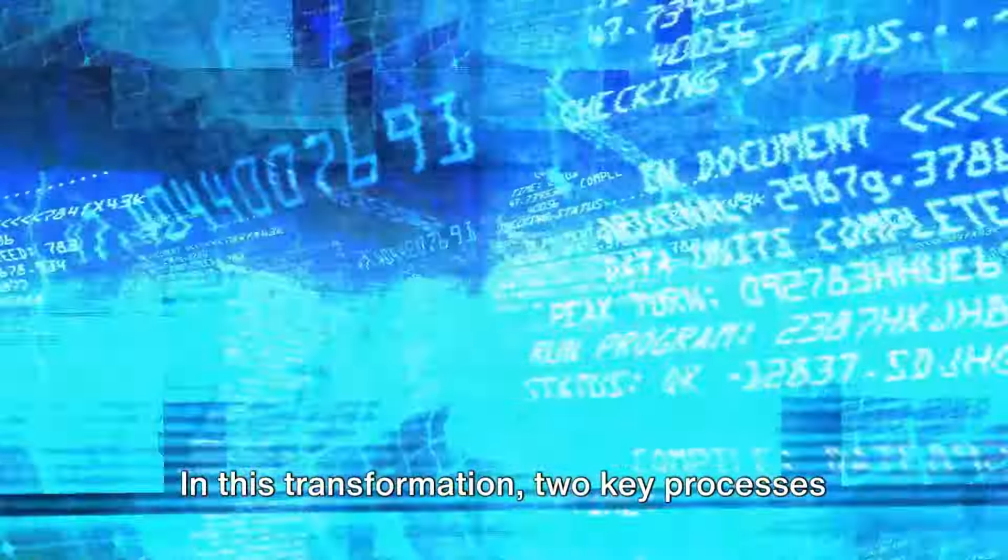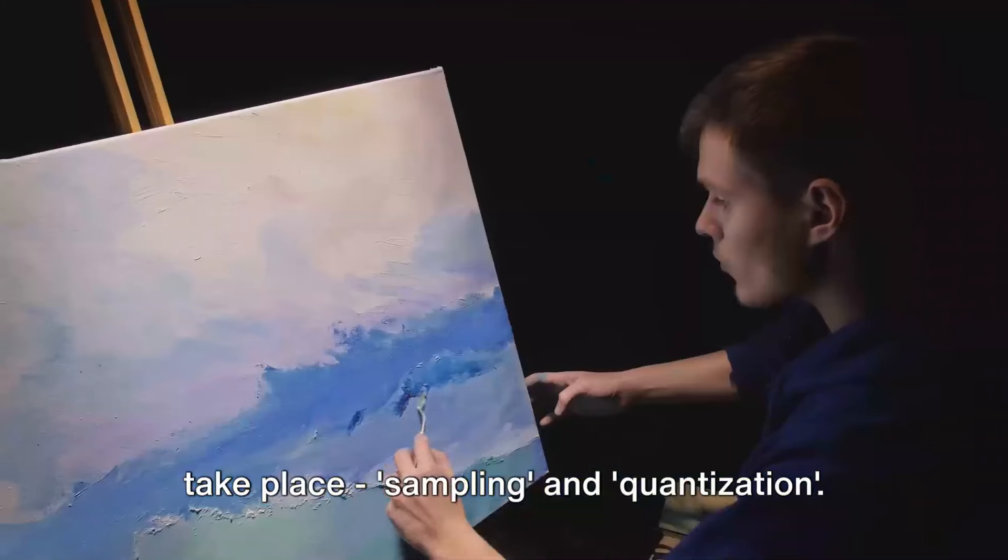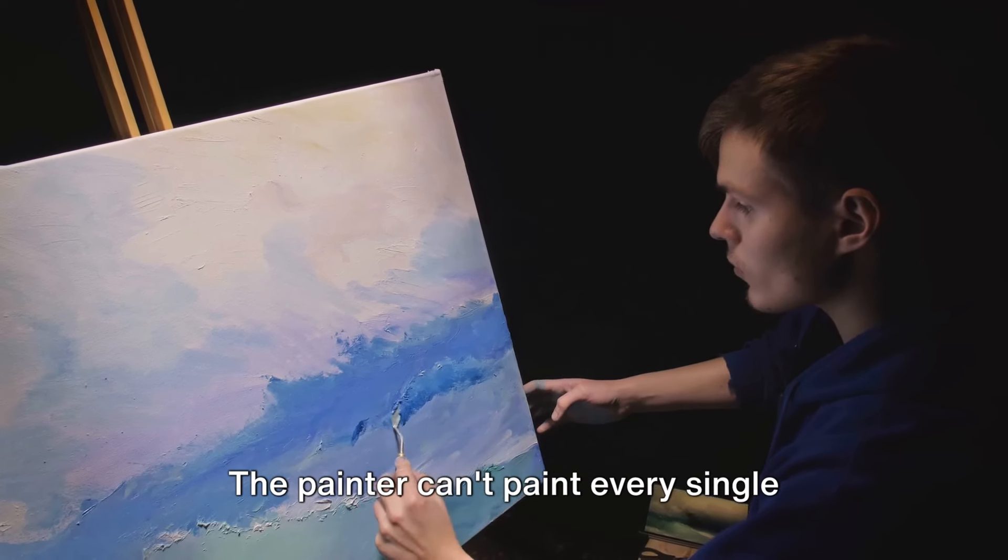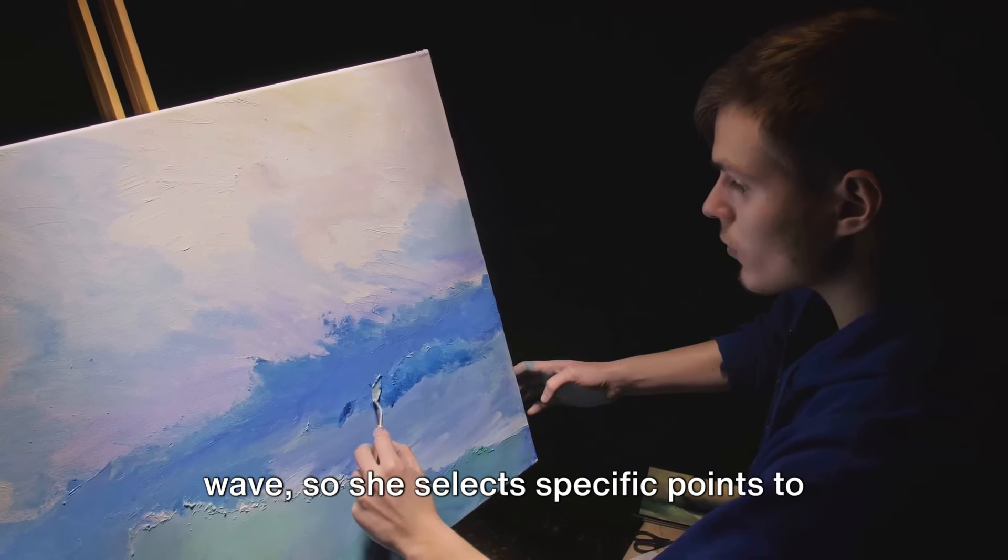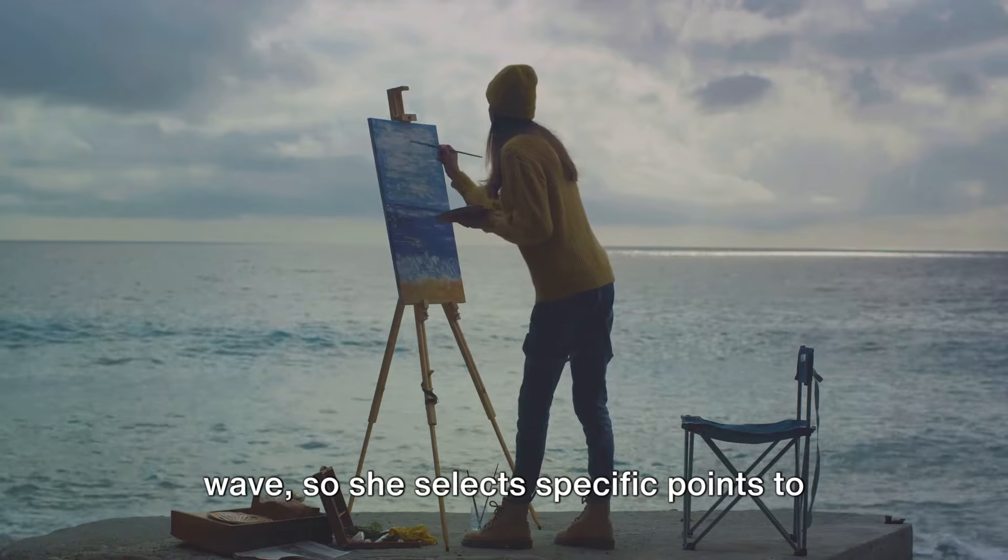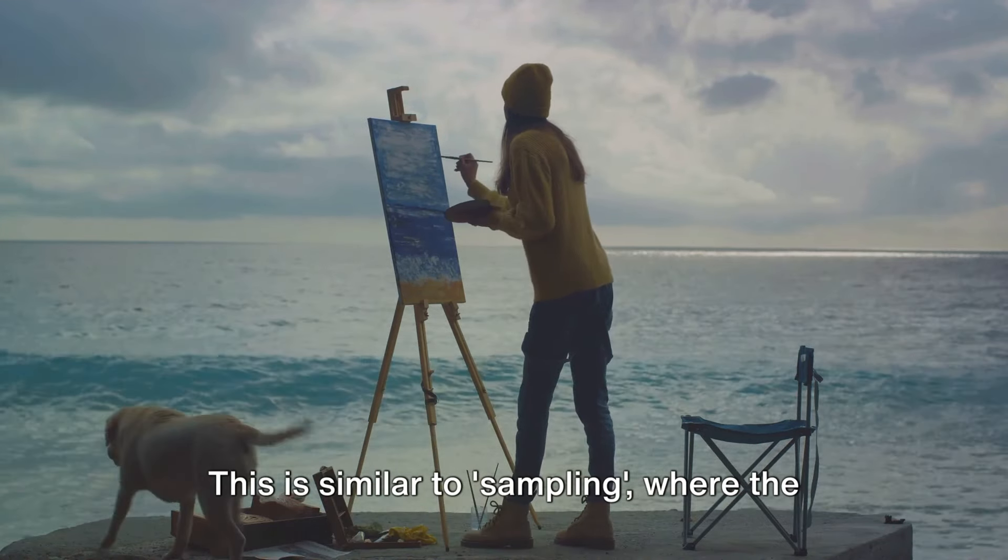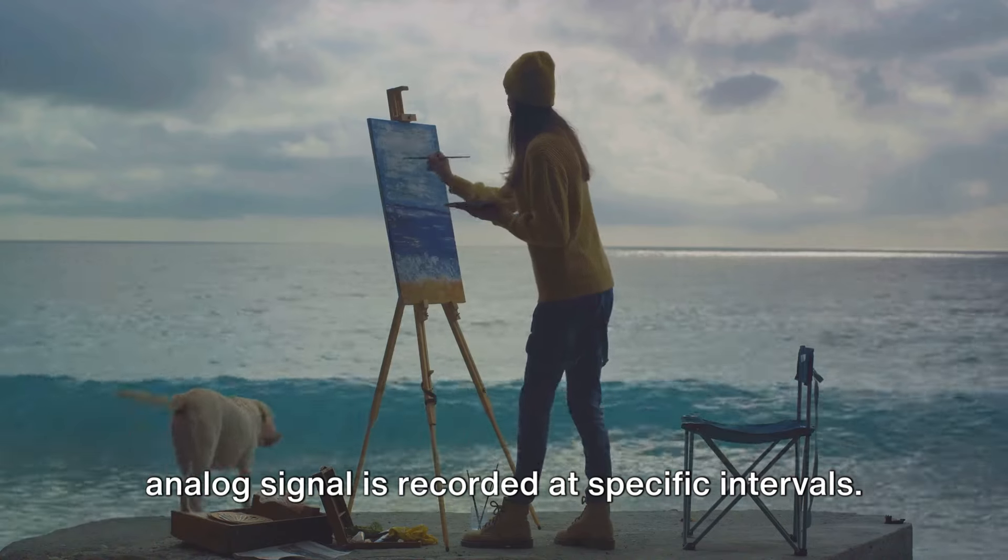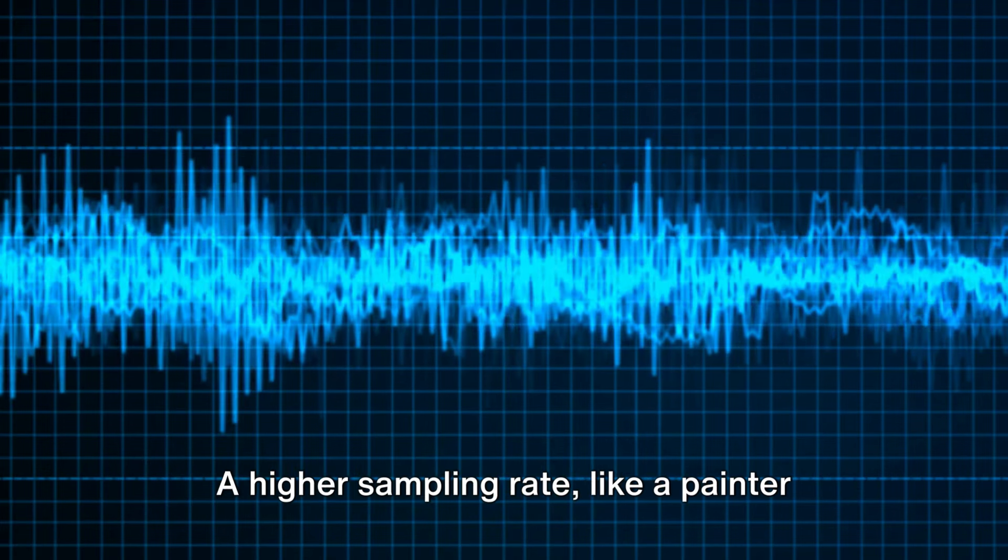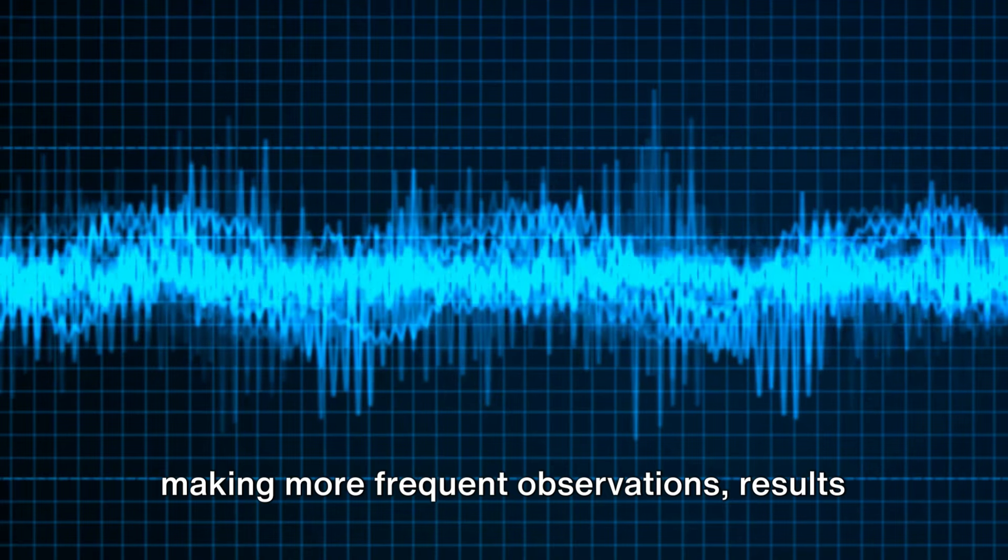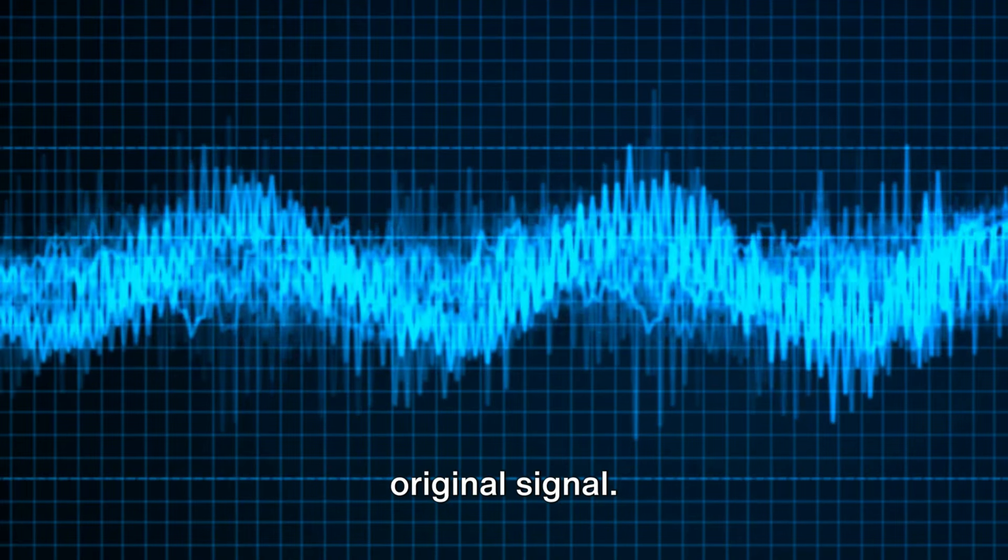In this transformation, two key processes take place: sampling and quantization. Picture a painter trying to capture the ocean on a canvas. The painter can't paint every single wave, so she selects specific points to represent the entire scene. This is similar to sampling, where the analog signal is recorded at specific intervals. A higher sampling rate, like a painter making more frequent observations, results in a more accurate representation of the original signal.